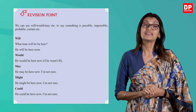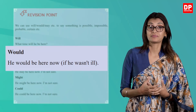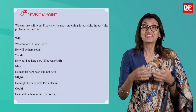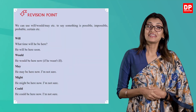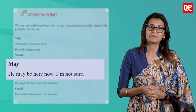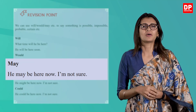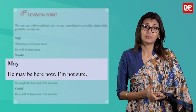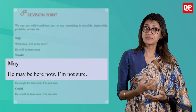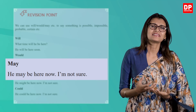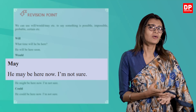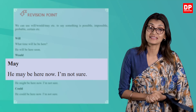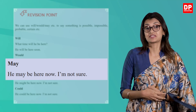The next modal verb is 'would.' He would be here now if he wasn't ill. The third modal verb given is 'may.' He may be here now — I'm not sure. As mentioned before, when you use 'may,' it is most likely that he may be here now, but it still remains a possibility.